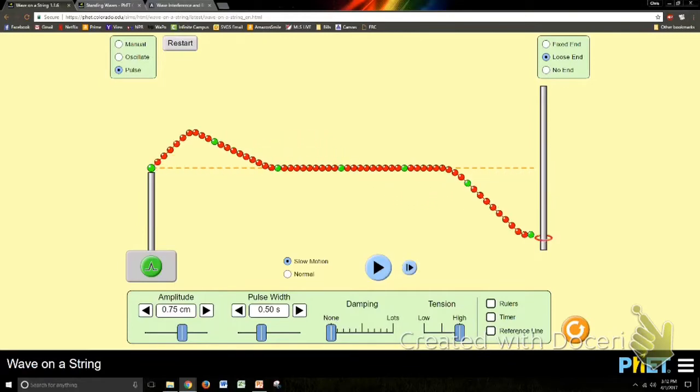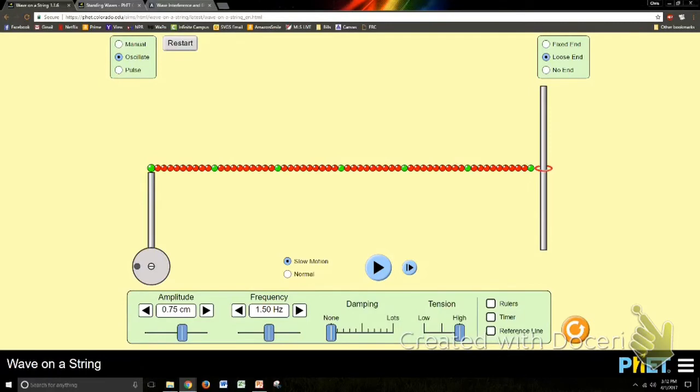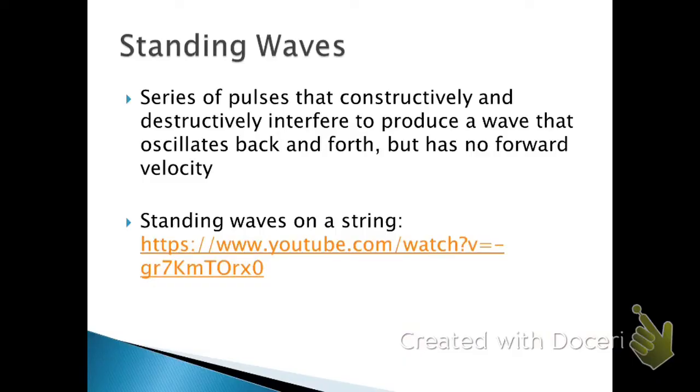Now when you continue to send a series of pulses over and over again, and they continue to interfere with each other, you can get what's called a standing wave. And all that a standing wave is, is a series of pulses that constructively and destructively interfere with each other, all on one string for example, or one column of air. And it makes a wave that looks like it moves back and forth from crest to trough, but it has no ultimate forward velocity.